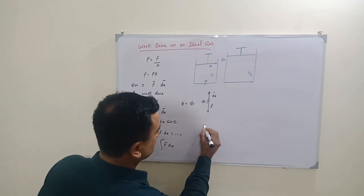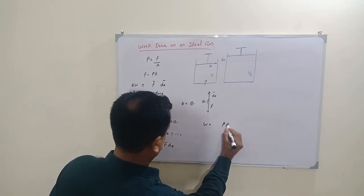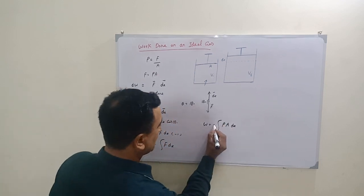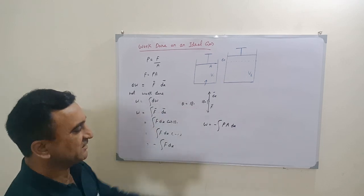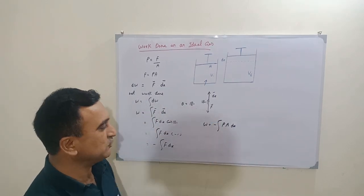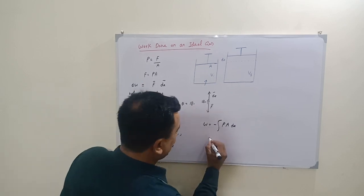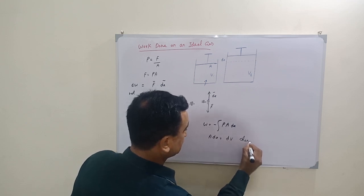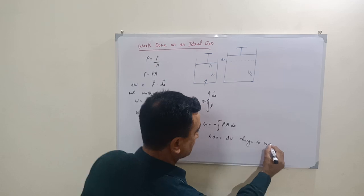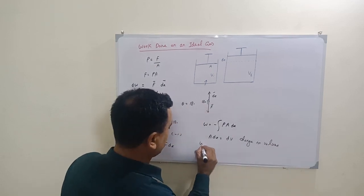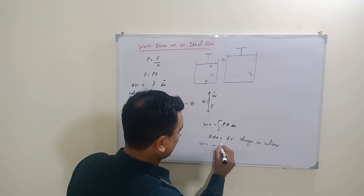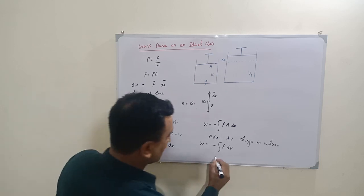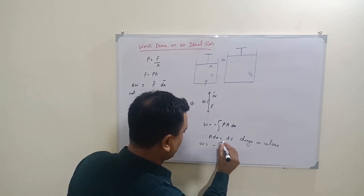Now we substitute the value of F = PA. So W = −∫PA dx, with limits from initial volume Vi to final volume Vf. Here, A·dx equals dV, the change in volume. Therefore, the work done on an ideal gas becomes W = −∫P dV, with limits from Vi to Vf.